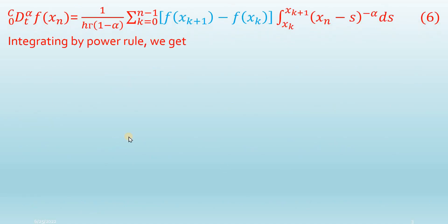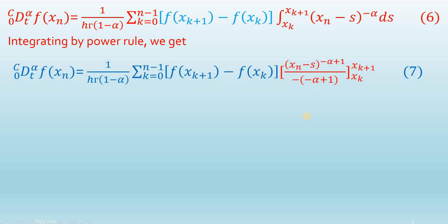We obtain equation 6 by also taking the difference of the two function values outside of the integral sign. This term can then be integrated using the power rule, and applying the power rule gives equation 7.